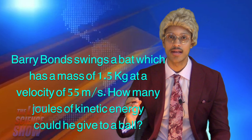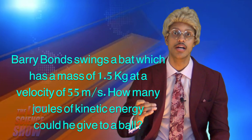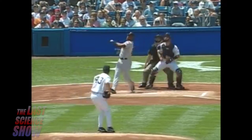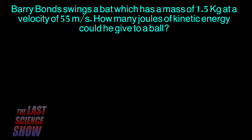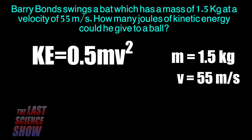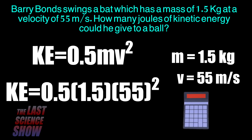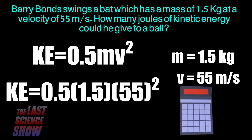Barry Bonds swings a bat which has a mass of 1.5 kilograms at a velocity of 55 meters per second. How many joules of kinetic energy could he give to a ball? This problem is asking us for the kinetic energy, so we'll need our formula: KE equals one-half mass times velocity squared. The mass is 1.5 kilograms and the velocity is 55 meters per second. If you take half of 1.5, you'll get 0.75 kilograms. You simply plug that into the formula along with squaring the velocity — so it's 55 squared times 0.75 — and you'll get your answer.